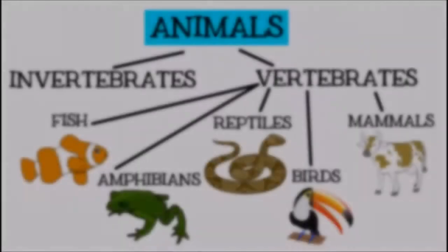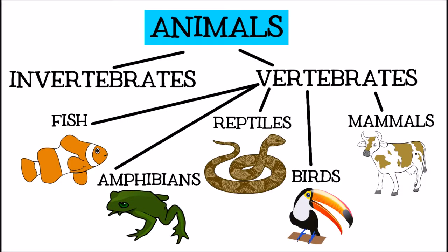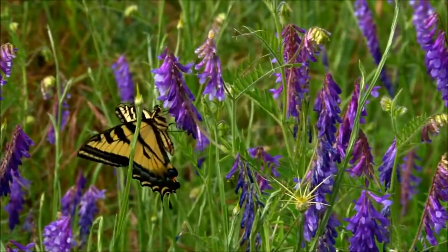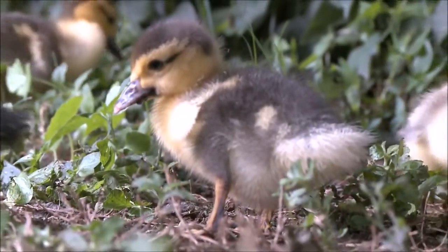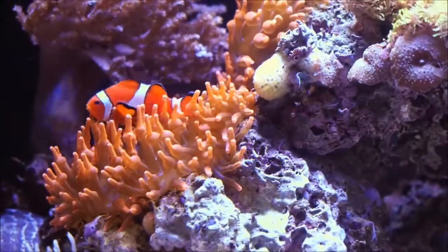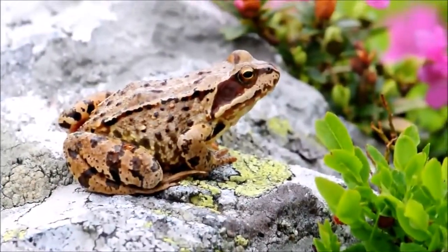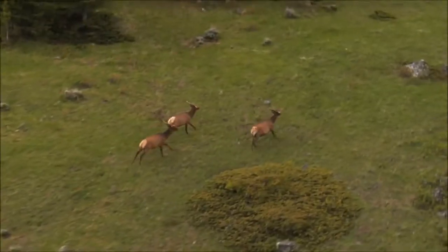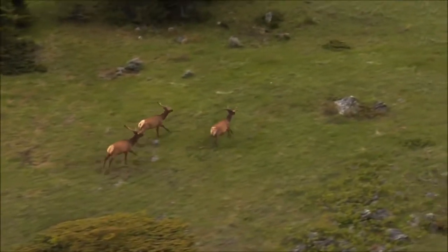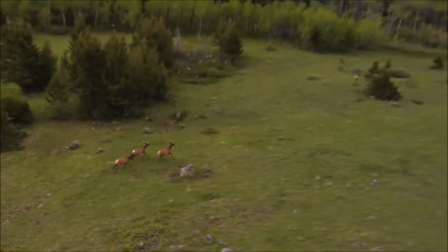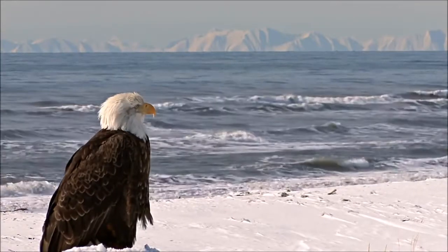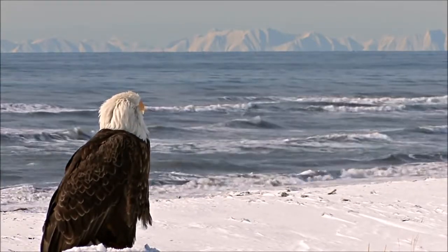A fun fact about mammals is that mammals are the only animals to have ears that stick out. The animal kingdom is classified into many different groups based on animal characteristics to help us understand the world around us. Saying an animal is an invertebrate, a vertebrate, a fish, amphibian, reptile, bird, or mammal tells us many things about it that can help us to understand its needs and behavior. I hope you enjoyed learning about animal classification today. Goodbye till next time!